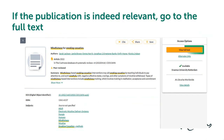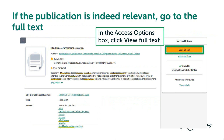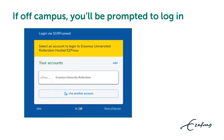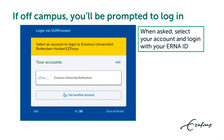View the subjects to get ideas for alternative search terms. Click on a subject to find literature on that topic. If the publication is indeed relevant, go to the full text by clicking the button in the access options box.